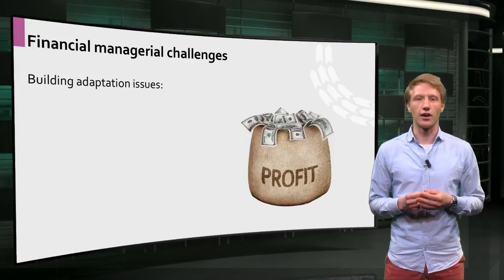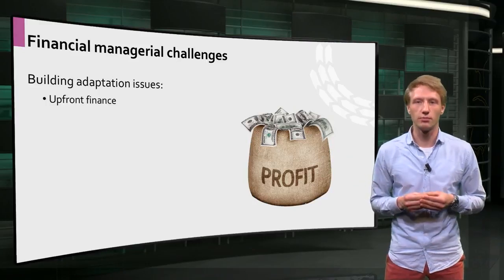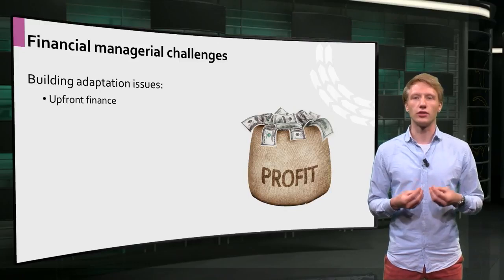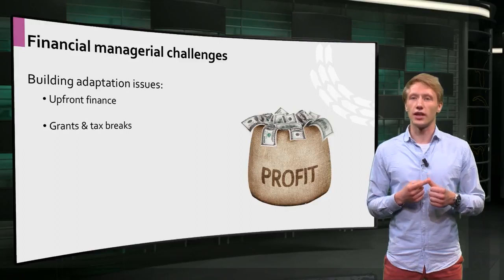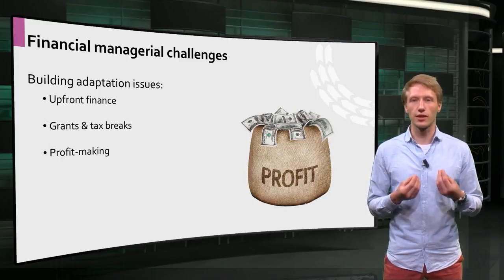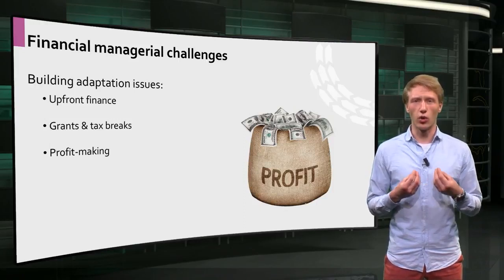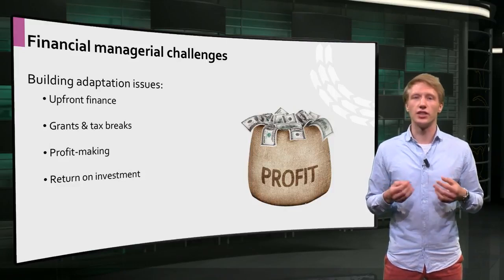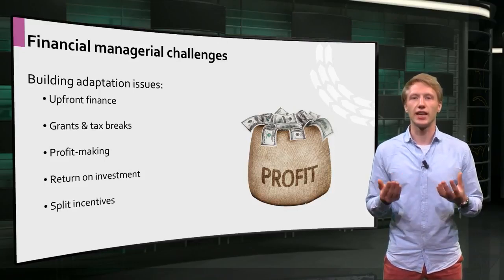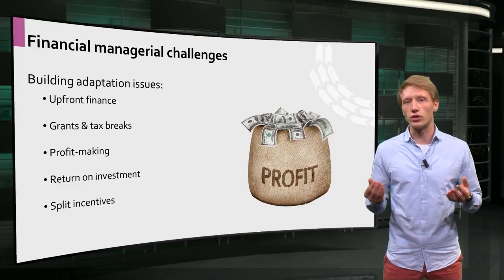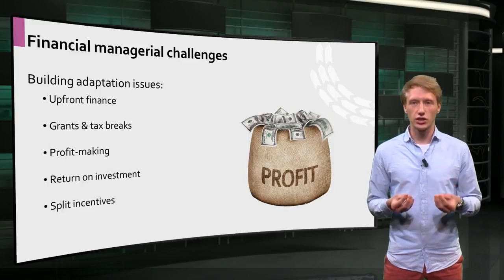Last but not least, there are many financial challenges to be overcome. Finance must be secured before commencing any building adaptation. Often money comes from owners or investors who commission it, but sometimes government grants or tax breaks can help as well. Developers also need to make a decent profit with the adaptation, and they are always searching for ways to minimize risks like unforeseen costs such as contamination. Investors also want a piece of the pie, and they will only invest in a building adaptation once it generates a return on investment in the long run. The fact that a sustainable building adaptation is not always financially preferable has to do with what we call split incentives. Split incentives occur when those responsible for paying energy bills, which are often the tenants, are not the same entities as those making investment decisions, which are often the building owners. Therefore, owners often lack the incentive to invest in an energy efficient building.